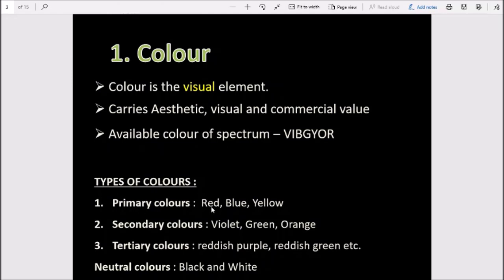In primary colors we have red, blue, and yellow. Secondary colors are formed from combinations of primary colors. Like red and blue combine to make violet, blue and yellow make green, and red and yellow make orange.